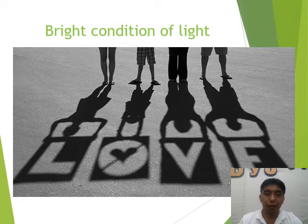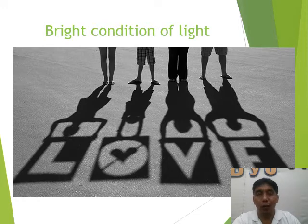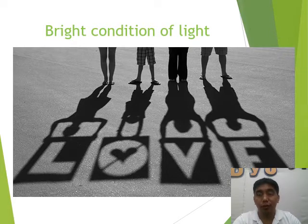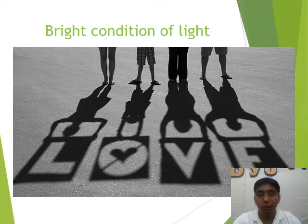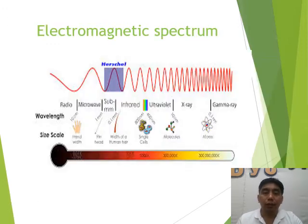These three conditions of light — hazy, dull, and bright — are the basis for adjusting the three features in your camera. Remember, what we are after is the quality of photograph, not the quantity. The quality photograph is the basis for the court in accepting it as evidence. To achieve quality, you adjust the ISO, the F-number, and the shutter speed based on these three light conditions.